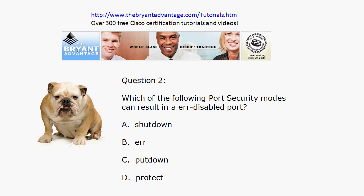Speaking of port security, the valid modes are A and D: shutdown and protect. There's also a restrict mode, but 'ERR' and 'put down' are not valid port security modes. The mode that by default can result in an error-disabled port is A, shutdown, and that is also the default port security mode.